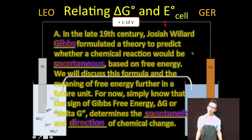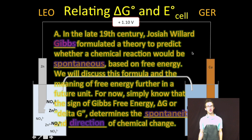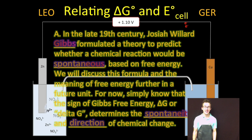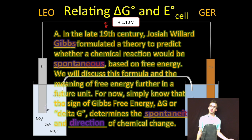To start this video off, we're gonna talk about my good friend Josiah Willard Gibbs. He formulated a theory to predict whether a chemical reaction would be spontaneous based on something called free energy.